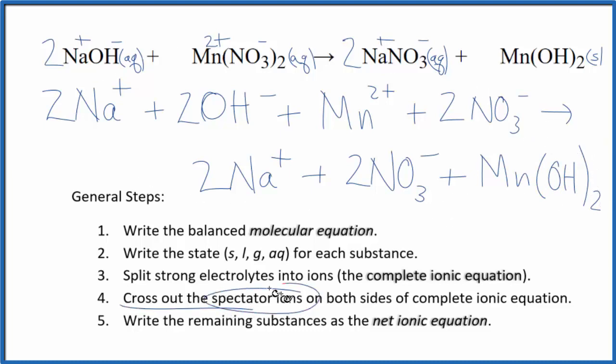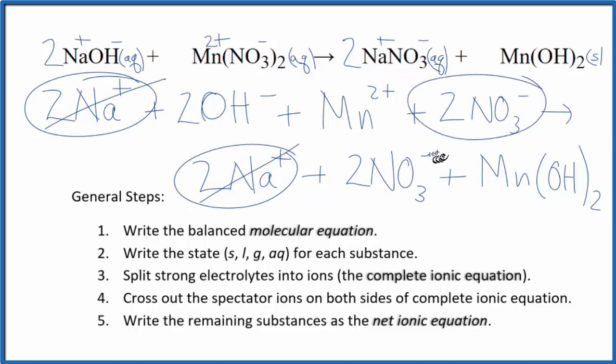Now we can cross out spectator ions. They're on both sides of the complete ionic equation. They haven't changed, so we're not interested in them. I can see in the reactants here, I have 2 sodium ions and in the products, cross that out. 2 nitrate ions and in the products, 2 nitrate ions. Cross that out, and what's left, that's our net ionic equation for sodium hydroxide plus manganese 2 nitrate.